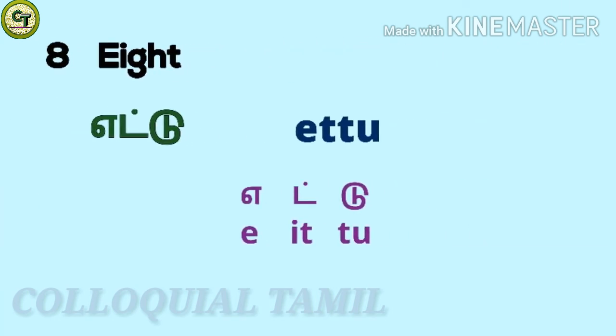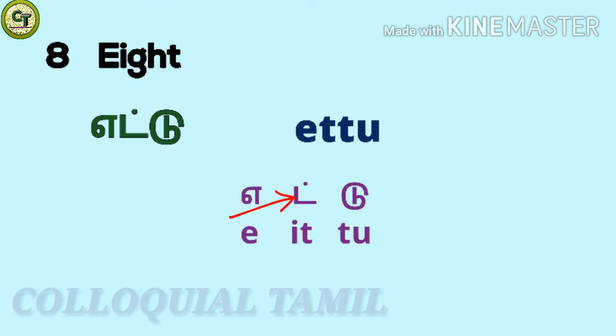For eight: 'ettu'. E — a short vowel, tt — a consonant, u — a short letter together: ettu.